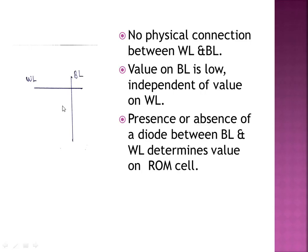In a Diode-Based ROM cell, the presence or absence of a diode between the bitline and wordline determines the value stored in the ROM cell. If you have a data pattern such as 1, 0, 1, 1, you connect a diode for cells storing 1 and leave no diode for cells storing 0. This is the diode-based approach.